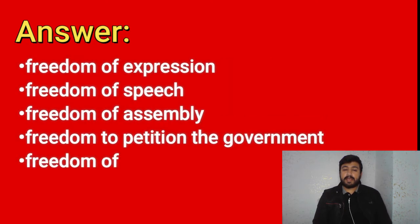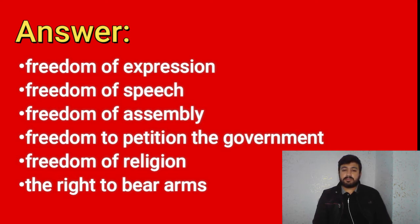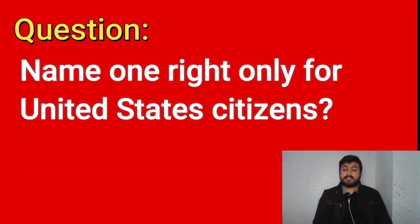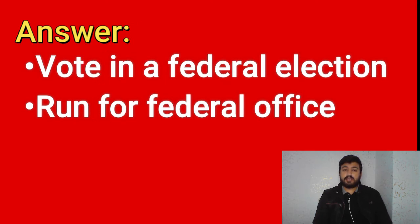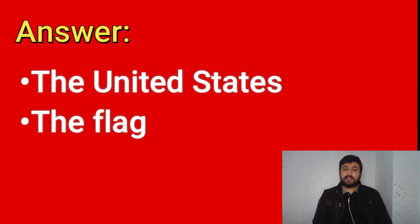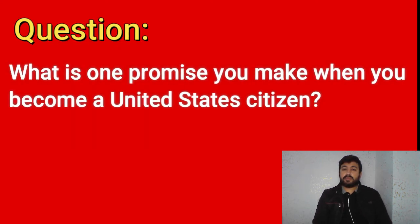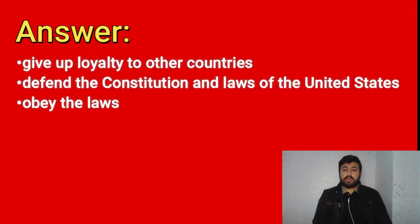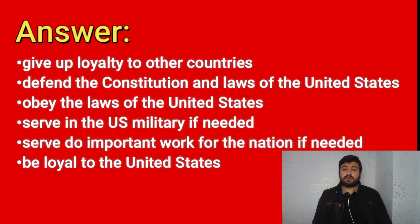What are two rights of everyone living in the United States? Freedom of expression, freedom of speech, freedom of assembly, freedom to petition the government, freedom of religion, the right to bear arms. Name one right only for United States citizens: vote in a federal election, run for federal office. What do we show loyalty to when we say the Pledge of Allegiance? The United States, the flag. What is one promise you make when you become a United States citizen? Give up loyalty to other countries, defend the Constitution and laws of the United States, obey the laws, serve in the U.S. military if needed, serve important work for the nation if needed, be loyal to the United States.